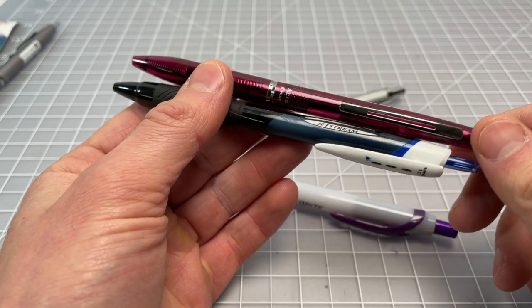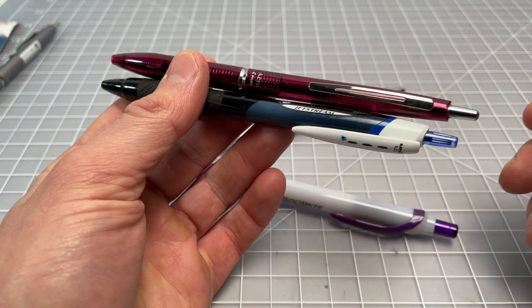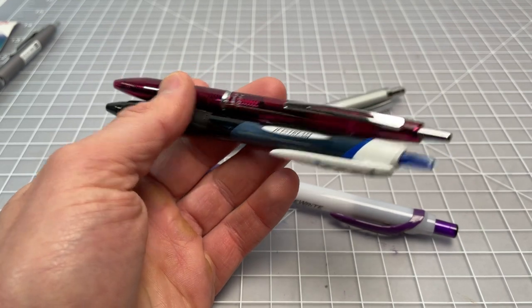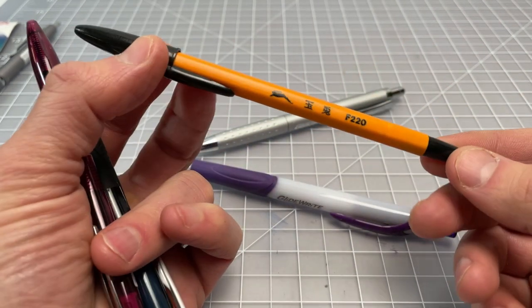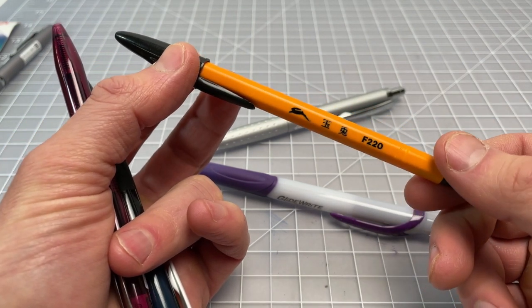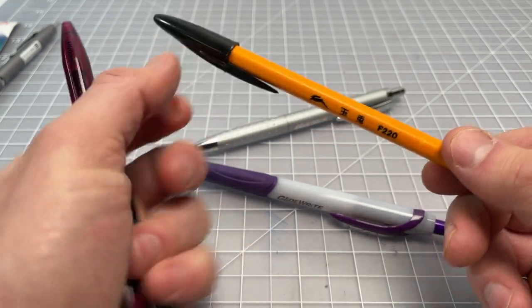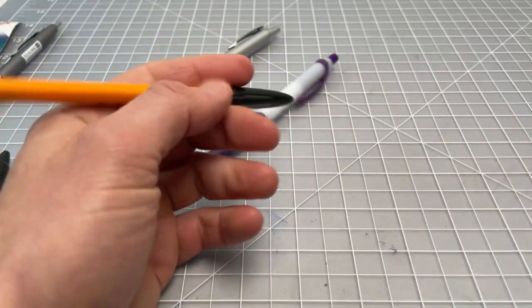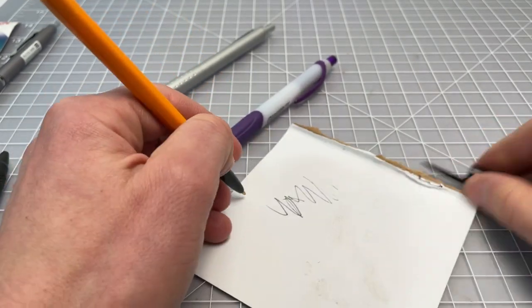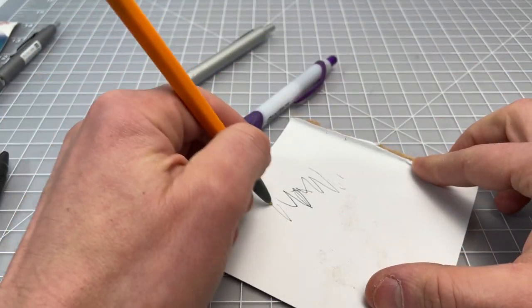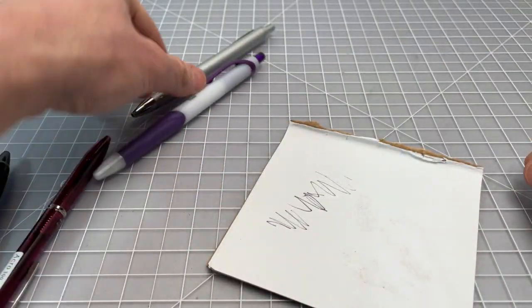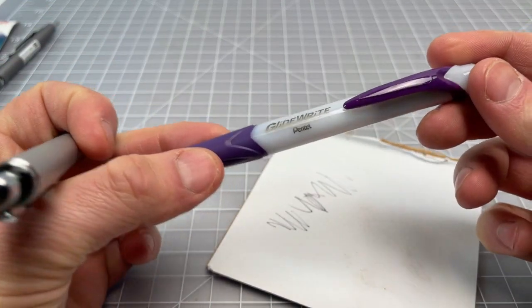It's much more akin to something like the Pilot Acro or the Uni Mitsubishi Jetstream. Both of those are ballpoints, but when you write with them, you don't think this is one of those really draggy, old-school, thick ballpoints, one of those pens that have been around since the 70s that have a lot of functionality to them but have a really thick, draggy feel and that sort of light color normally associated with a classic ballpoint. That's not what we find in the Gliderite.